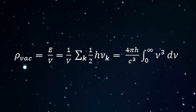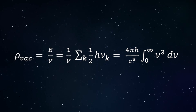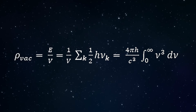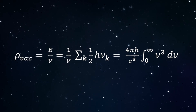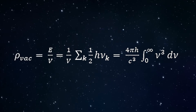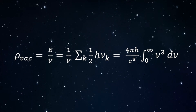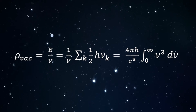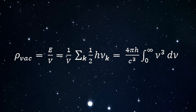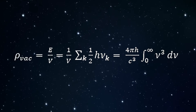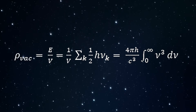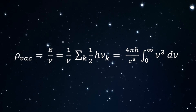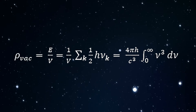As v approaches infinity, one obtains the right-hand side of the equation. We can remove the infinity by replacing the upper limit of the integral by a cutoff frequency set by the Planck scale, but this still results in a huge vacuum energy by 120 orders of magnitude.